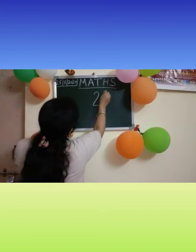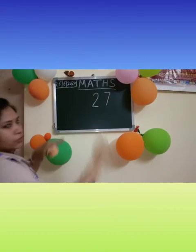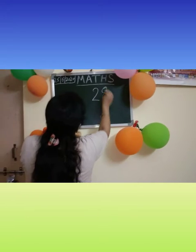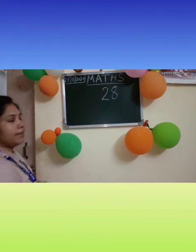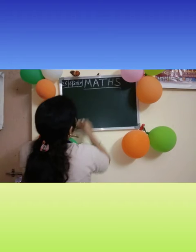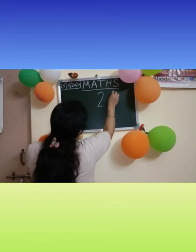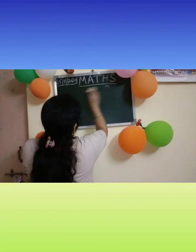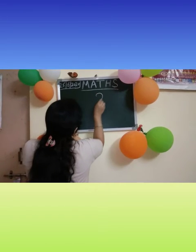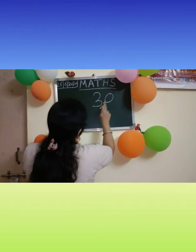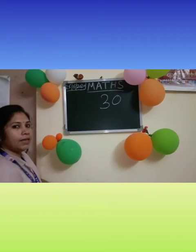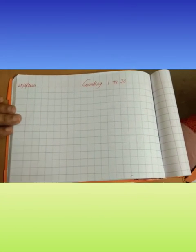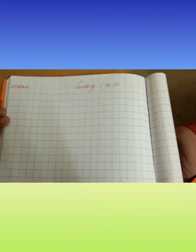2 and 7, 2, 7, 27. 2 and 8, 2, 8, 28. Next number 2 and 9, 2, 9, 29. And lastly we reach our goal. 3 and 0, 3, 0, 30. Now children look here, this is your maths copy. Now I will teach you how to write here. Ok.